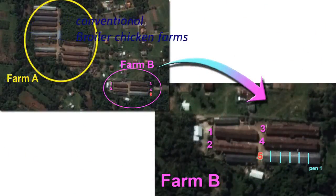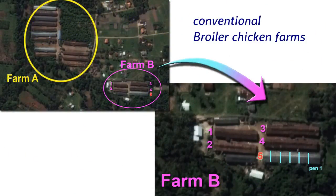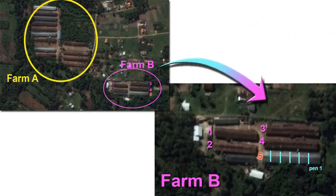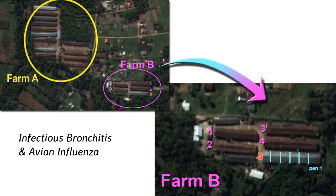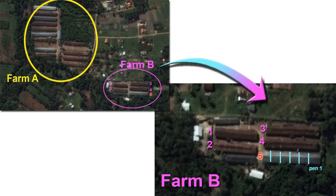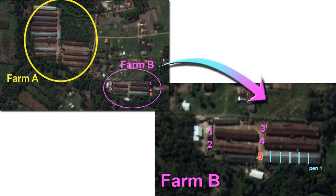In this episode, we will observe two broiler chicken farms with cases of infectious bronchitis (IB), followed by avian influenza. In this area there are two conventional broiler farms — Farm A and Farm B. Farm A has a larger population, located about 300 meters from Farm B. Both are conventional poultry farms with an open-side house system.